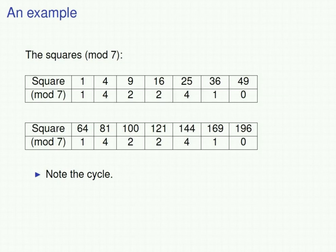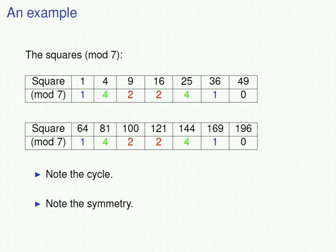The cycle is of length 7. This is analogous to the cycle of final digits of square numbers being of length 10. Note also that there's a symmetry: if you look at the first six digits of the sequence of squares mod 7, it reads the same forwards as backwards, just like the sequence of final digits of squares.